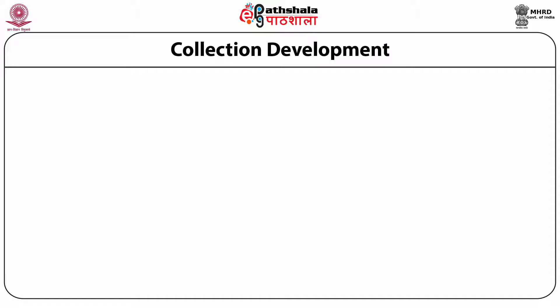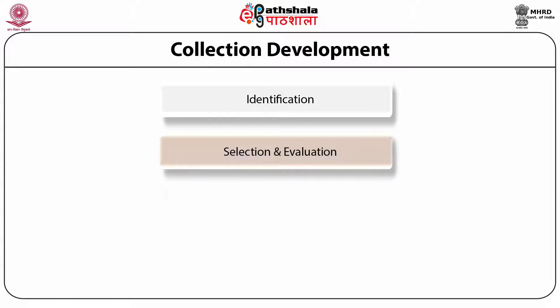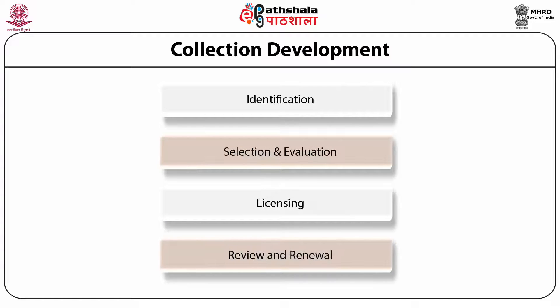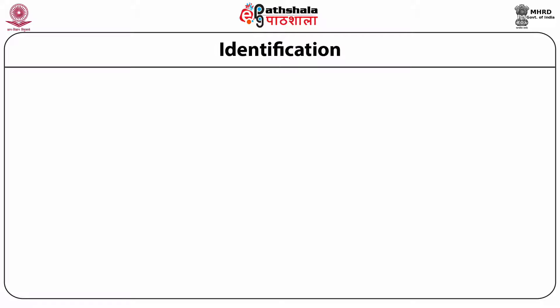Collection development process is as follows: identification, selection and evaluation, licensing, review and renewal. Identification refers to how existing digital resources are located and utilized. It also refers to the evaluation of existing resources based on usage statistics, research output and cost-benefit analysis. The identification process for an electronic resource can be time consuming and laborious.